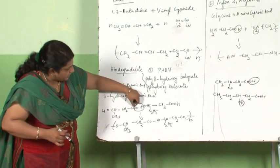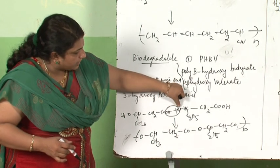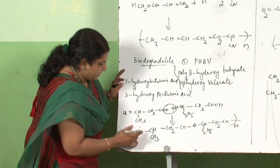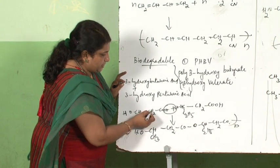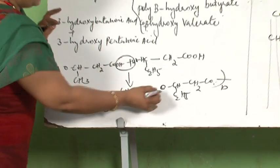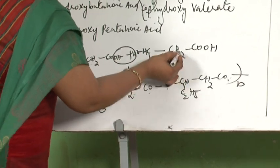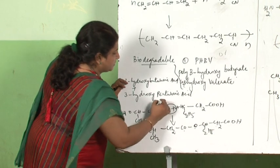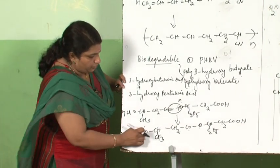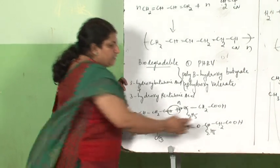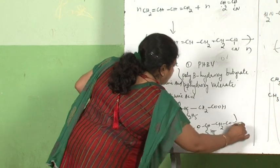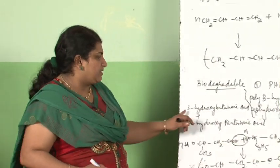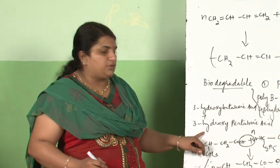In the polymer, instead of a free OH and COOH, we write -O-CH(CH3)-CH2-COO- linked to -CH(C2H5)-CH2-COO-, repeated N times. This is PHBV — a biodegradable polymer. If the monomer is asked: 3-hydroxybutanoic acid and 3-hydroxypentanoic acid.